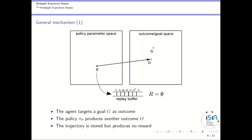With this neural network, you play some trajectory. This trajectory is put into your replay buffer, where each sample contains state information, goal information, action, reward, and next state. If the outcome is different from your goal — considering a sparse reward problem where only being at the goal is rewarded — then the reward associated with the replay buffer is just zero everywhere. The agent targets a goal, produces another outcome, the trajectory is stored, but it produces no reward.